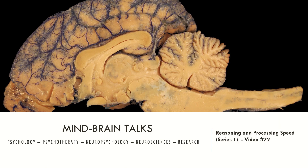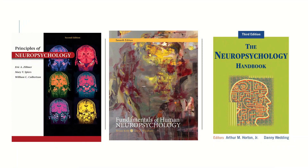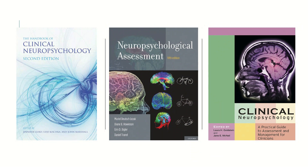But first let's see the manuals that I recommend to you today. The first is the Principles of Neuropsychology. The second is the Fundamentals of Human Neuropsychology. The third is the Neuropsychology Handbook. The fourth is the Handbook of Clinical Neuropsychology, second edition. The fifth is the Neuropsychological Assessment. And the sixth is Clinical Neuropsychology.